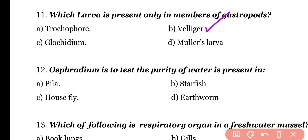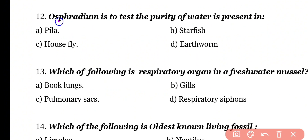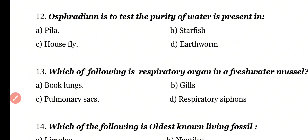Question number 12: Osphridia, which is used to test the purity of water, is present in which organism? Options: Pila, Starfish, Housefly, Earthworm. Correct answer is option A. Osphridia is a type of chemoreceptor and it is present in Pila (snail genus).